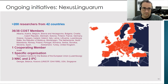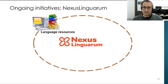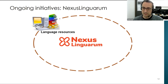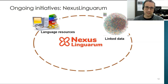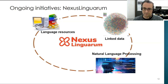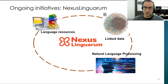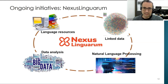We have more than 200 members registered in the network. The core idea of Nexus is to grow this ecosystem at the intersection of language resources, linked data, natural language processing — techniques to bridge the gap between humans and computers through language — and data analysis.